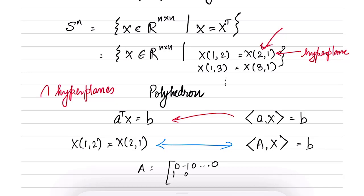In fact, try to please try to verify that if I choose A as 0 minus 1 and then all other 0s, then 1 and all other 0s and 0s everywhere else. So then this A corresponds to the A that is required in order to express this equation X(1,2) equal to X(2,1) as inner product of A, X equal to B. So in this case B is 0 and A is this.